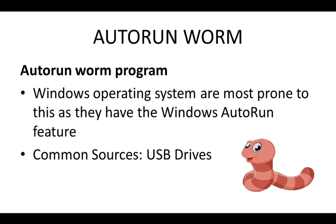Next up we are talking about the auto-run worm. This worm takes advantage of the auto-run feature which comes with the Windows operating system, and most of the time these programs are transferred through USB drives. When you share data from one computer to another, if your computer is infected it will copy infected files onto the USB drive, and when you plug that drive into someone else's computer, those computers will also get infected.